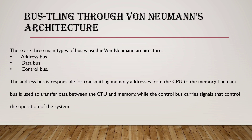Moving on to the next topic — buses in Von Neumann's architecture. There are mainly three types of buses: the Address Bus, the Data Bus, and the Control Bus. The Address Bus is responsible for transmitting memory addresses from the CPU to memory. The Data Bus is used to transfer data between the CPU and memory. The Control Bus carries signals that control the operation of the system.